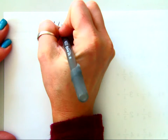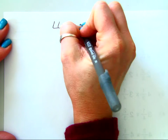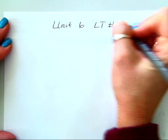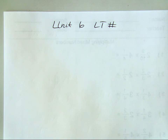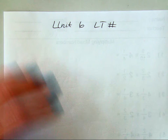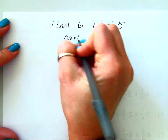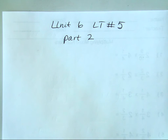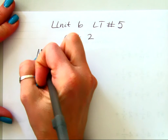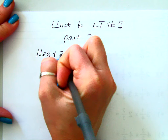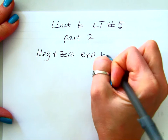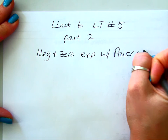Now with power of a power. This is learning target 5, part 2. Yesterday we did negative and zero exponents with multiplication and division. Today we're going to do negative and zero exponents with the power of the power.